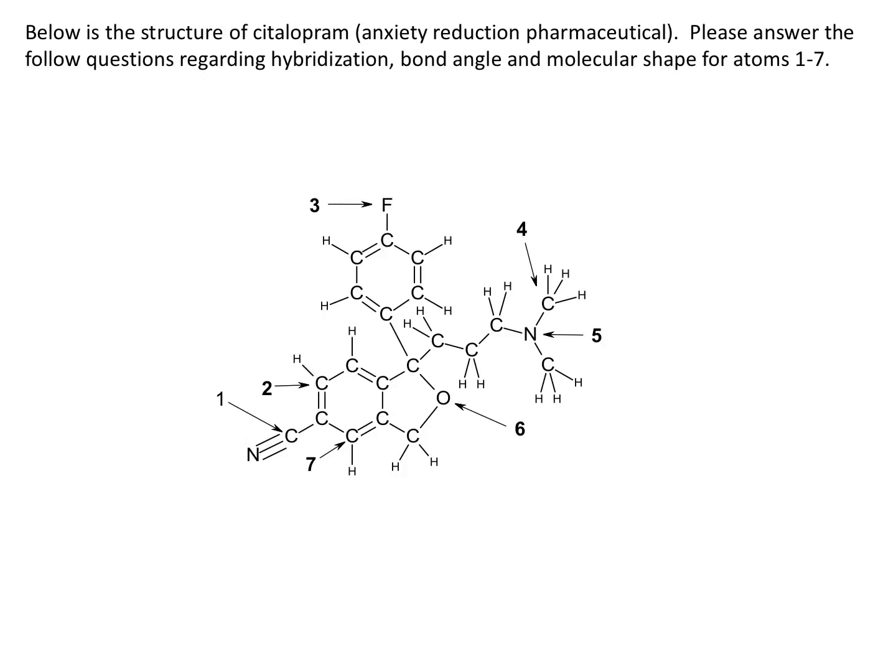Let's focus on carbon number one. You can see that it has four bonds already attached to it, so I don't need to add any lone pairs. This has two electron regions, and I believe this is going to be sp hybridized, with a bond angle of 180 and a shape of linear.